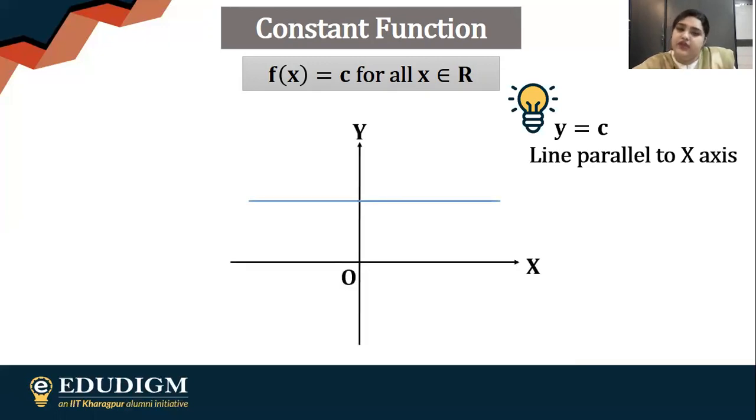This is how it will look like. It's basically a horizontal line. This is where I have taken c as positive. c can be negative as well. So depending on the value of c, you can actually draw the function. It will be simply a horizontal line. So this was our first function.